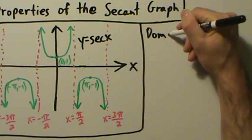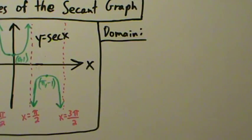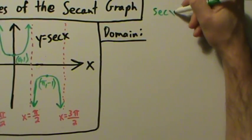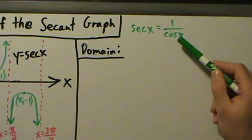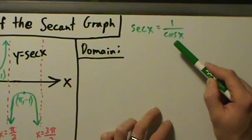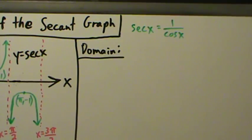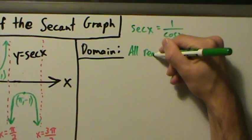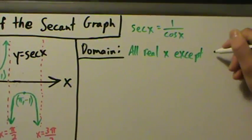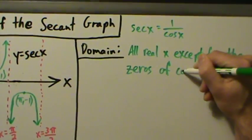We're going to start with the domain. The domain is the set of all x values that we're allowed to use — the set of all possible input values. We do have some restrictions here. Secant of x equals 1 divided by cosine of x. Cosine by itself has no domain restrictions, but the problem is that we're dividing by cosine, so we have to make sure that cosine is never zero. The 1 up top doesn't affect anything. So basically the domain is all real x except for the zeros of cosine.